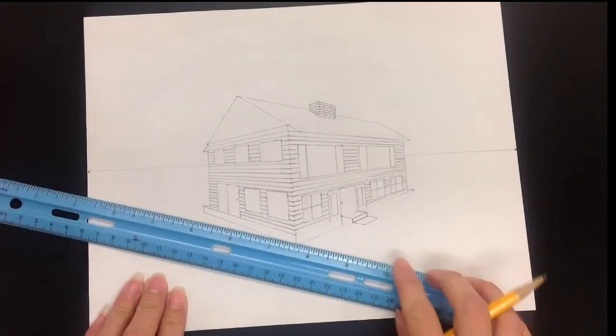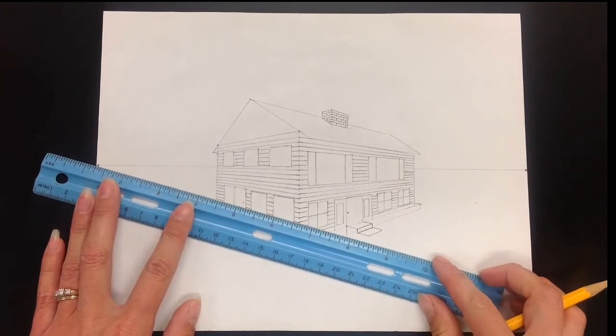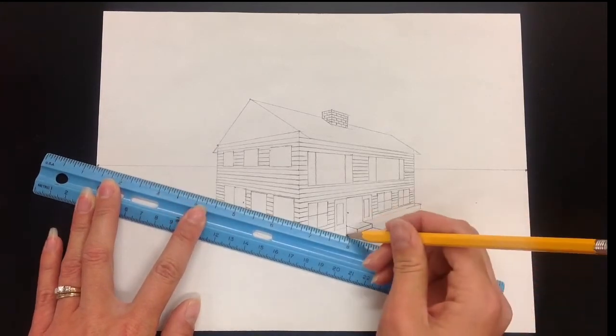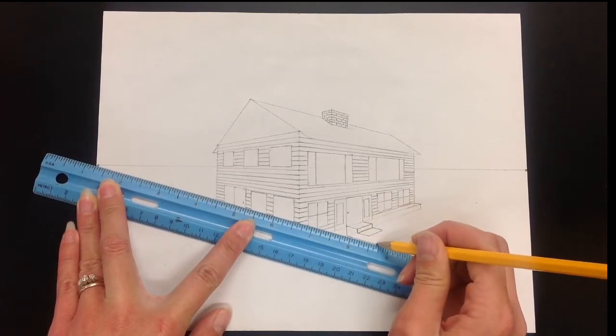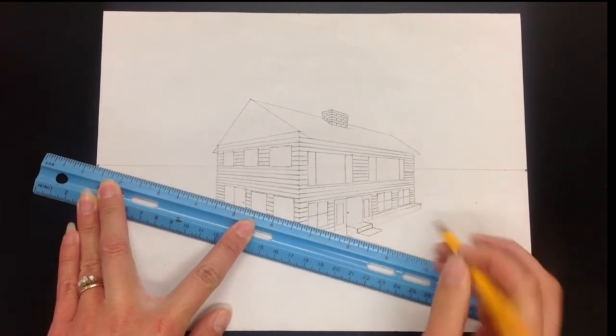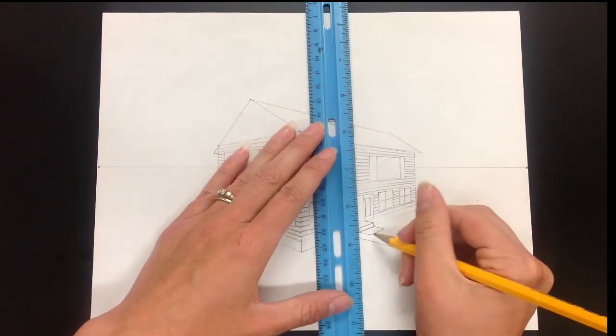We're then going to match up that line with your vanishing point on the opposite side and we're going to bring that line out. Again, we're trying to figure out how many more steps we really need to put in. So let's go a little bit further, and from here now let's go back and finish off that step.